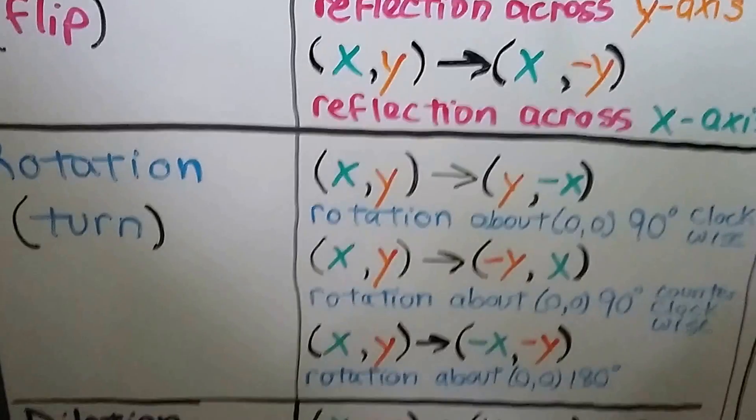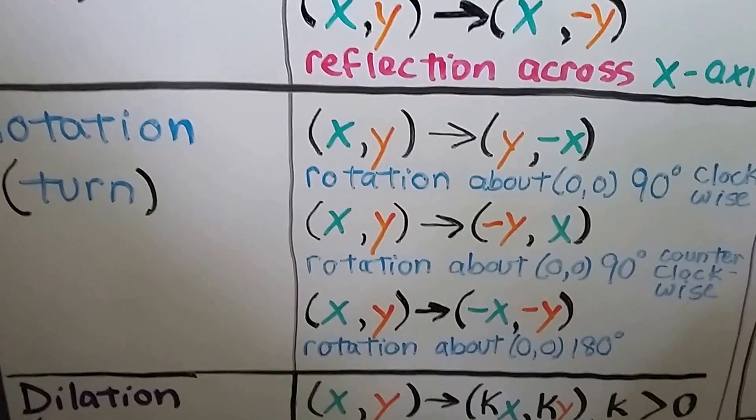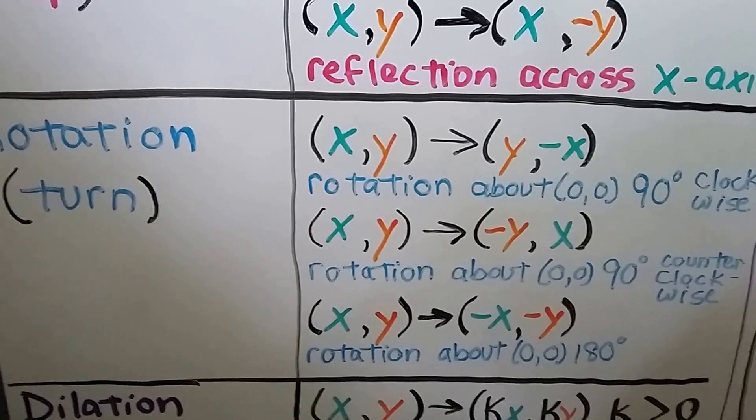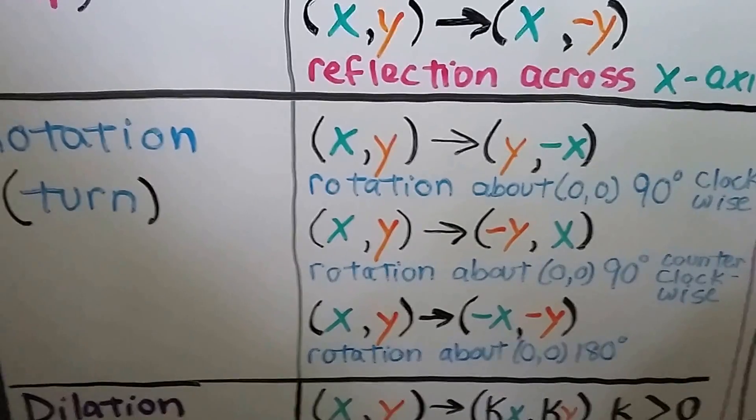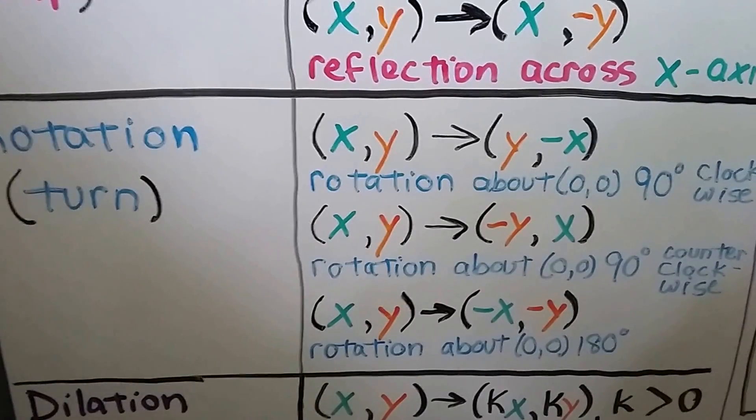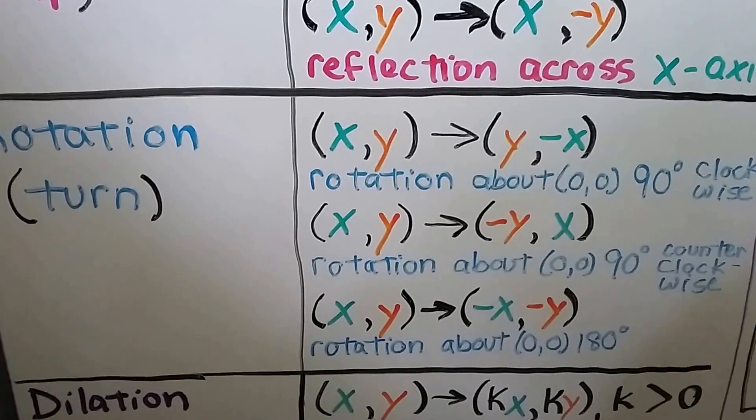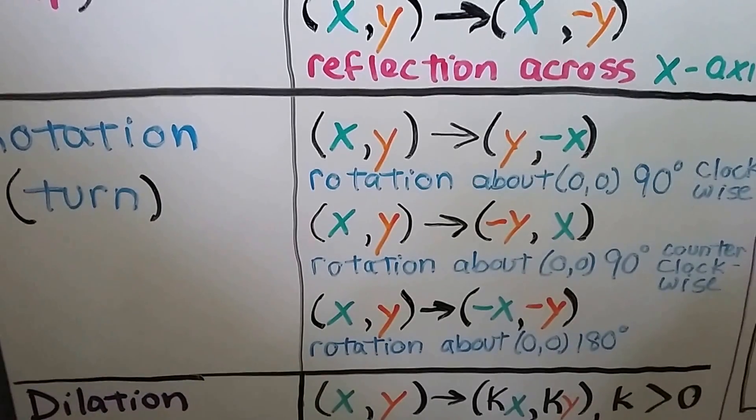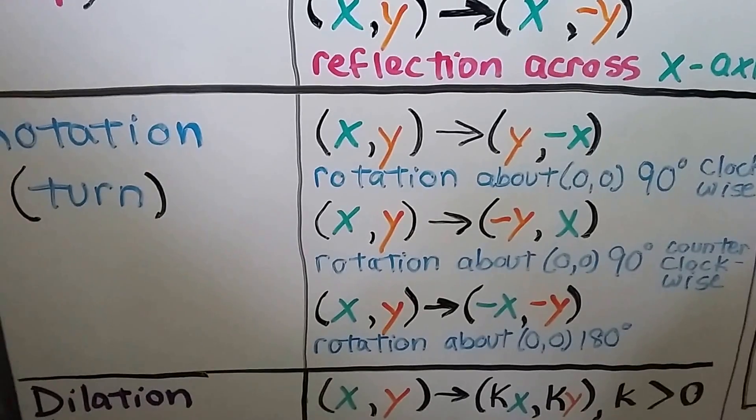And we have rotations. Those are turns. Our x, y would map to y, negative x. That would be a rotation about (0, 0), the origin, in a 90 degree clockwise direction. We could have x, y maps to negative y, x. That's a rotation about (0, 0), the origin, 90 degrees counterclockwise.